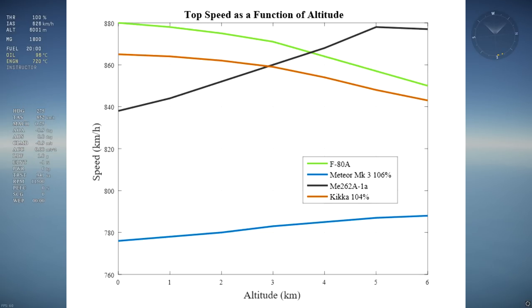The biggest change in speed concerns the ME262, which goes from nearly 840 km/h at sea level to nearly 880 km/h at 5 kilometers, and that's only a 40 km/h change. Below 3 kilometers, the F-80 is the fastest, followed by the Kika, the 262, and the Meteor in last place.